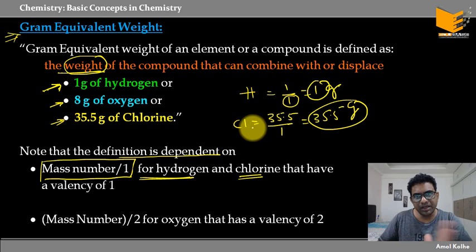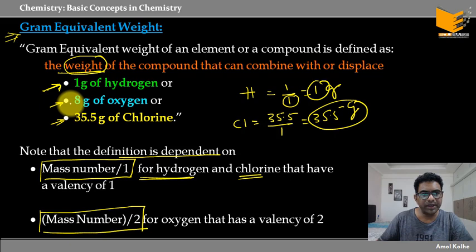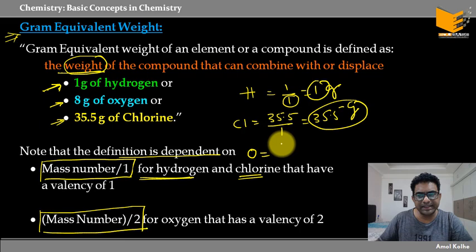This is something you should know from the periodic table — hydrogen is on the left-hand side and chlorine on the right-hand side, and both have valency 1. Similarly, for oxygen, it is mass number divided by 2, because we need 8 gram of oxygen. Oxygen का atomic mass होता है 16, divided by 2, so we get 8 gram. That 2 is the valency of oxygen.